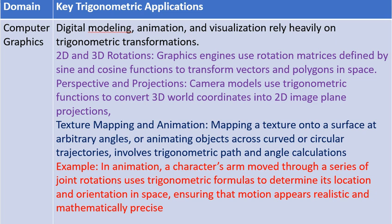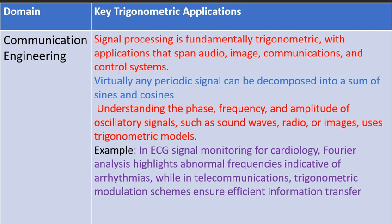In Communication Engineering, signal processing is fundamentally trigonometric, with applications spanning audio, image, communications, and control systems. Virtually any periodic signal can be decomposed into a sum of sines and cosines. Understanding the phase, frequency, and amplitude of oscillatory signals — such as sound waves, radio, or images — uses trigonometric models. For example, in ECG signal monitoring for cardiology, Fourier analysis highlights abnormal frequencies indicative of arrhythmias, while in telecommunications, trigonometric modulation schemes ensure efficient information transfer.